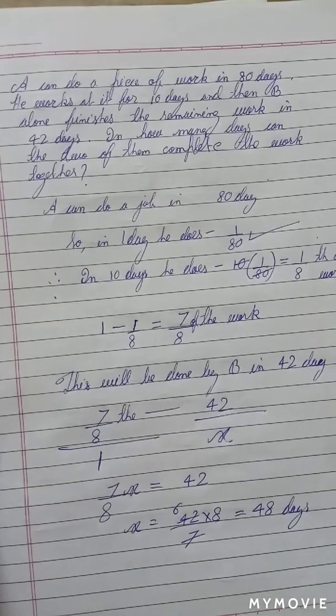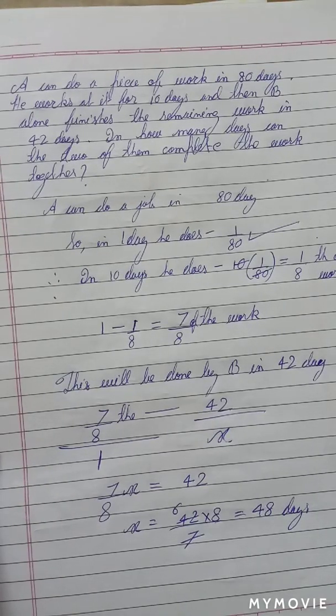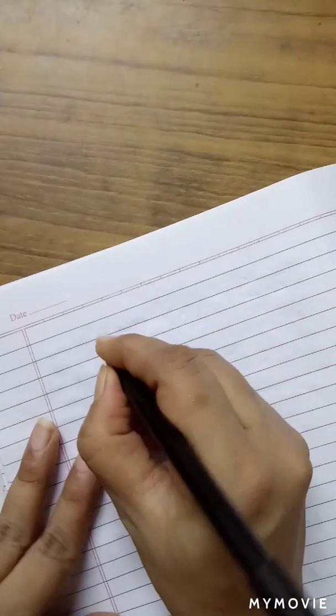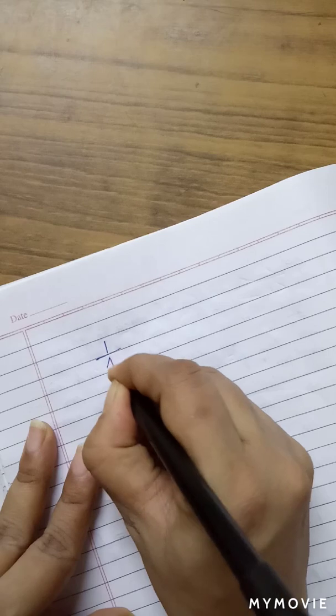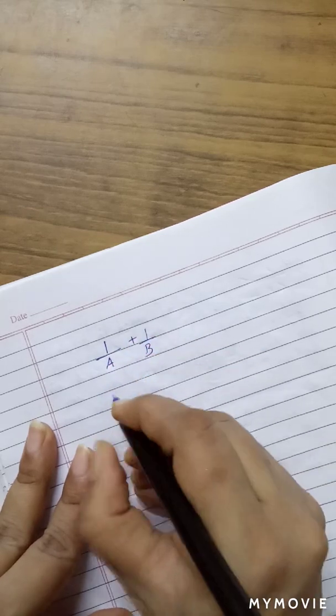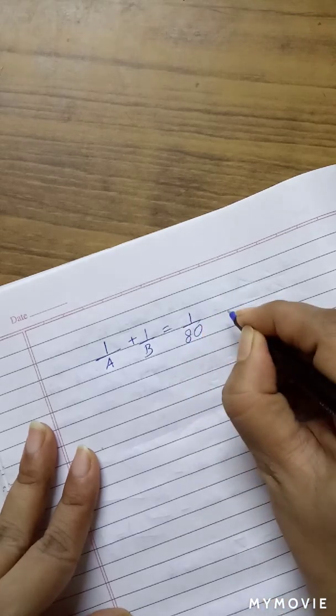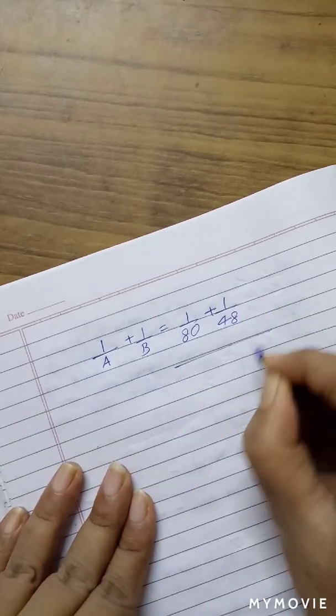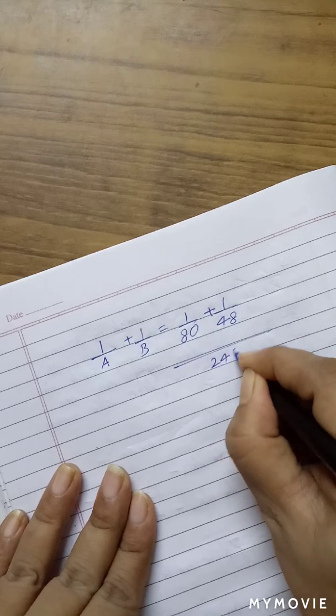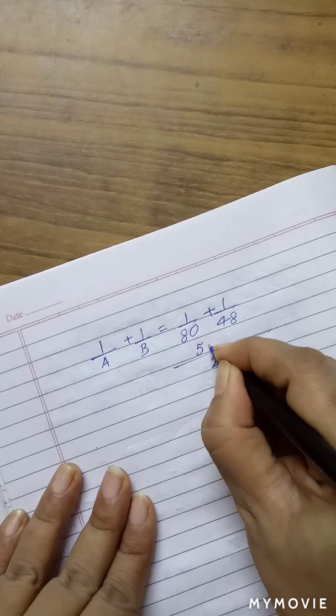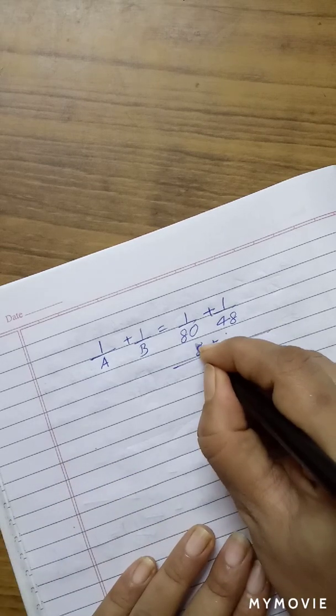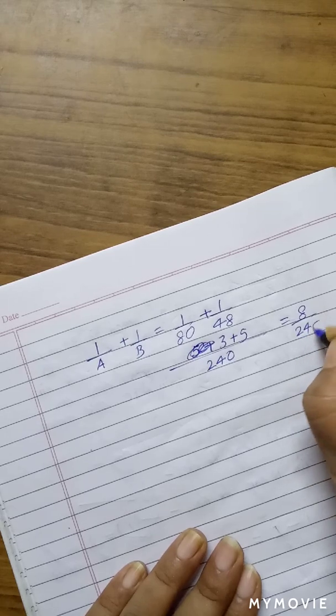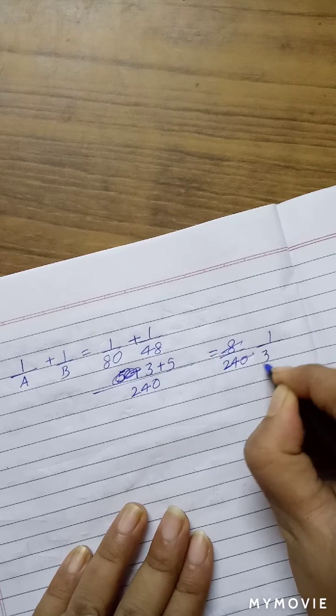The question is, how much time is A and B together going to take if they do the work together? Taking the LCM of 80 and 48, this is 240. In the numerator we have 3 plus 5, which is 8 by 240. This is equal to 1 upon 30.